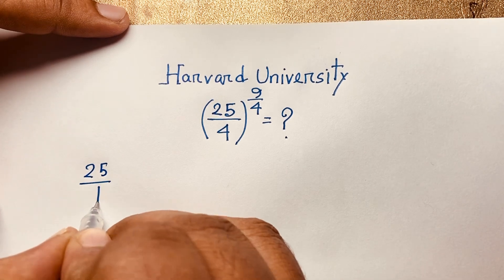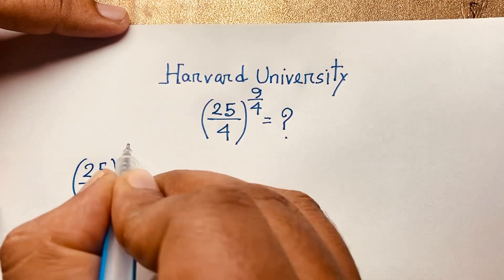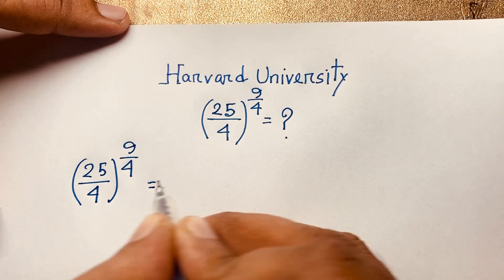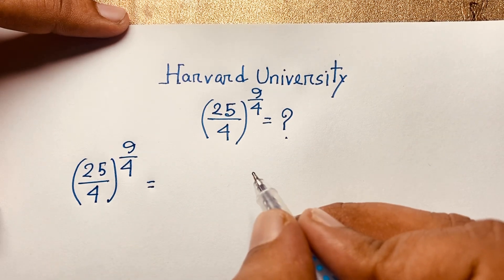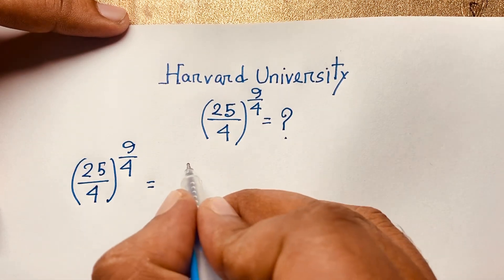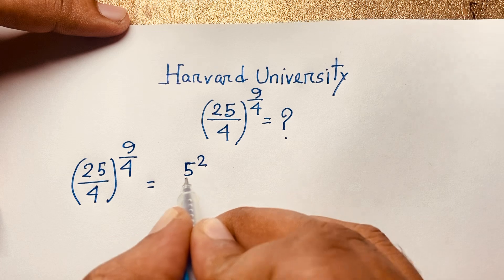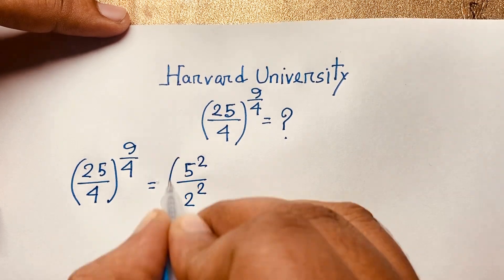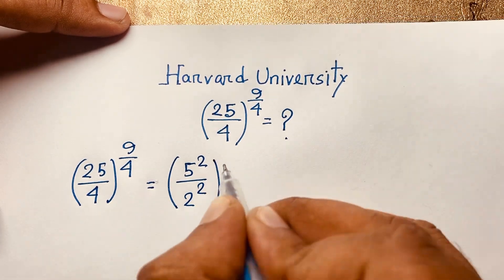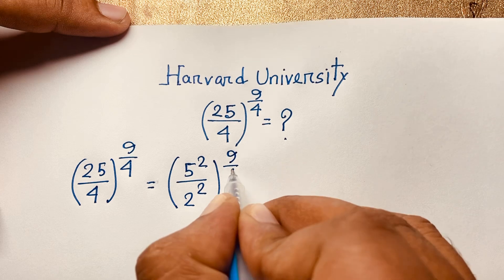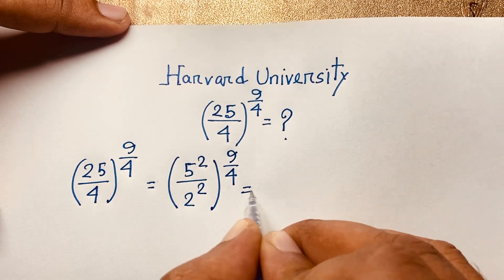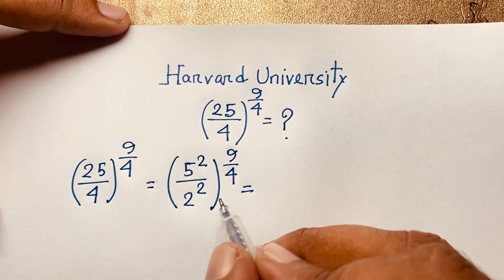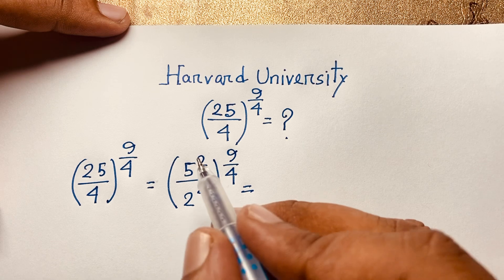Here we have 25 over 4 with power 9/4. At this moment I can see that 25 can be written as 5 to the power 2, and 4 can be written as 2 to the power 2, with the overall power still being 9/4. According to the exponential law we know that...